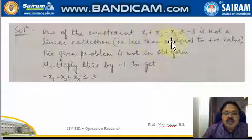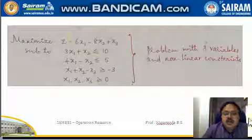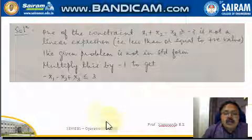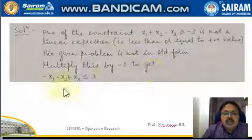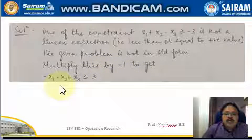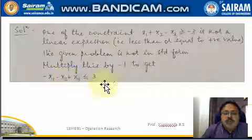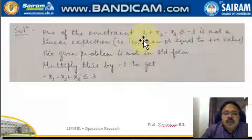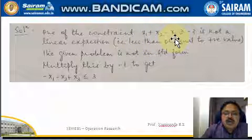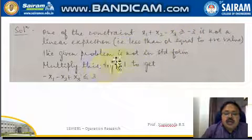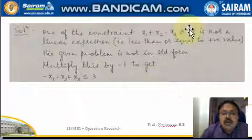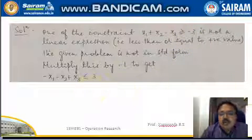One of the constraints — the third constraint in the given problem — has minus 3 on the right hand side, so it is not a linear expression. The given problem is not in the standard form. To make it into standard form, we multiply that particular constraint by minus 1. So we get minus x1 minus x2 plus x3, and the greater than or equal to constraint becomes less than or equal to, and minus 3 becomes plus 3 on the right hand side.